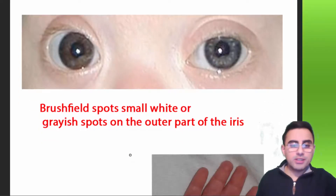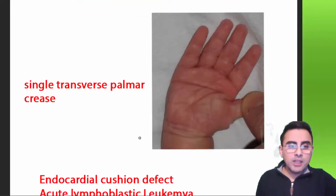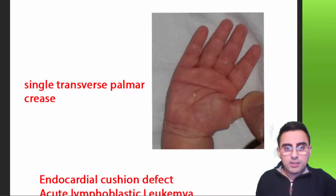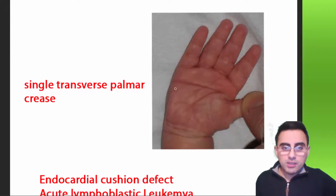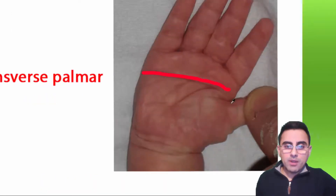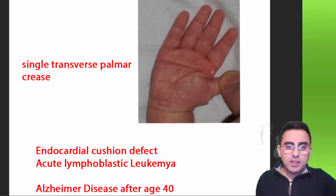A single transverse palmar crease is another hallmark. Normal people without Down syndrome typically have two creases on the palm, but in Down syndrome there is only one single transverse palmar crease. This feature is represented in more than 50% of Down syndrome cases.